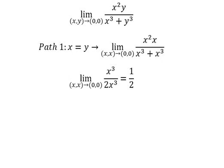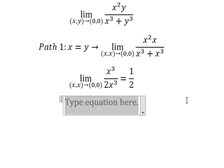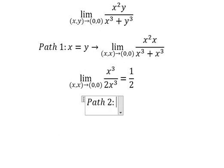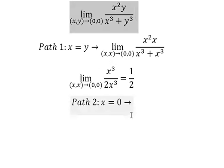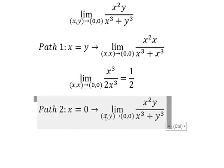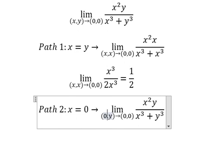Now we go to part number 2. x equals to zero. For this limit, we put zero in here. So you get zero in here and zero in here.